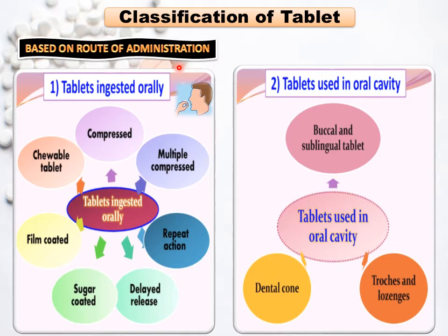First is tablets ingested orally. Tablets ingested orally are further classified into: compressed tablet, multiple compressed tablet, repeat action tablet, delayed release tablet, sugar coated tablet, film coated tablet, and chewable tablet. Next is tablets used in the oral cavity.